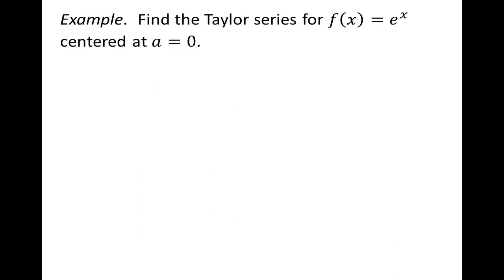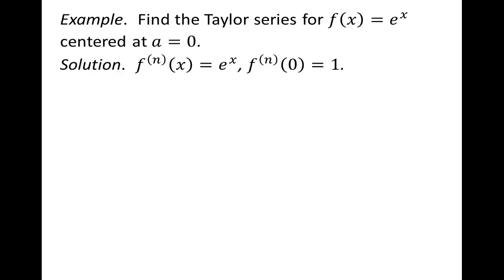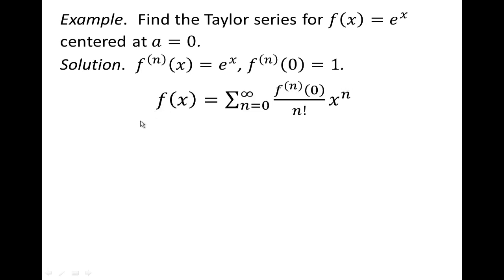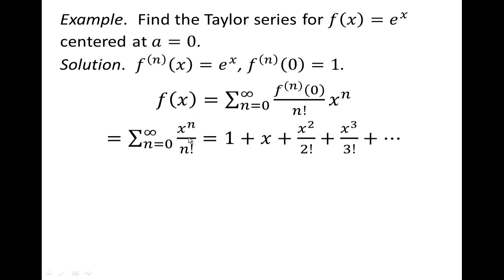Let's go back to e to the x centered at a equals zero. The great thing about e to the x is that its derivative and all higher derivatives are equal to e to the x. So if we find the nth derivative at zero, we just plug in zero and get 1. Using the Taylor series formula — the nth derivative at the center divided by n factorial times x to the n — every coefficient is 1 over n factorial. Written out: 1 + x + x²/2! + x³/3! + and so forth.